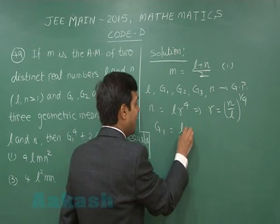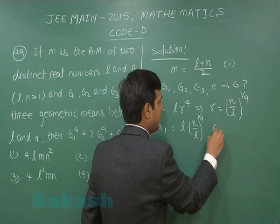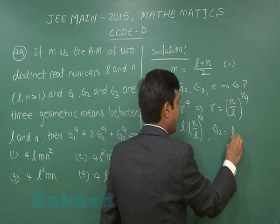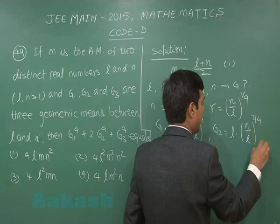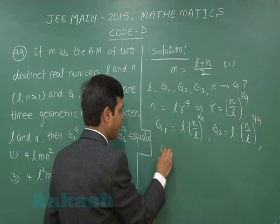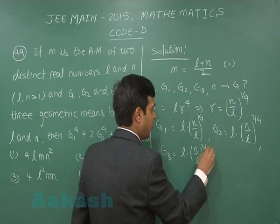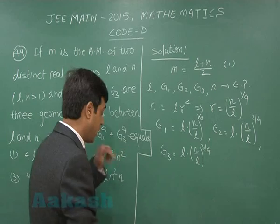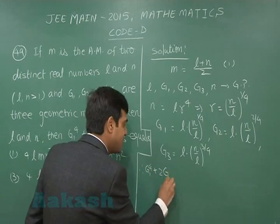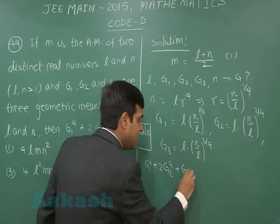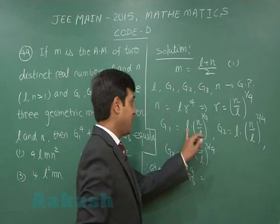Now we can find G1, G2, G3 using the common ratio. G1 = L·(N/L)^(1/4), G2 = L·(N/L)^(2/4), and G3 = L·(N/L)^(3/4). Now the required result is G1⁴ + 2G2⁴ + G3⁴.